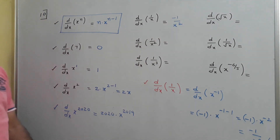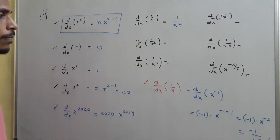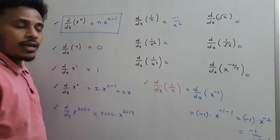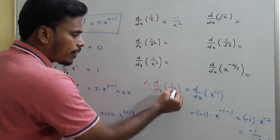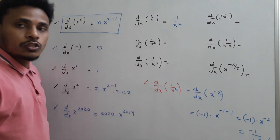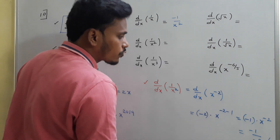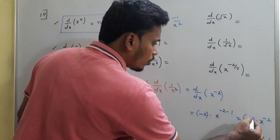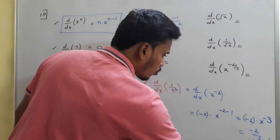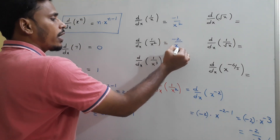So d/dx of 1/x is -1/x². Similarly, for d/dx of 1/x², rewrite as x^(-2). Applying the rule: -2 times x to the power -2 minus 1 equals -2 times x^(-3), which simplifies to -2/x³.